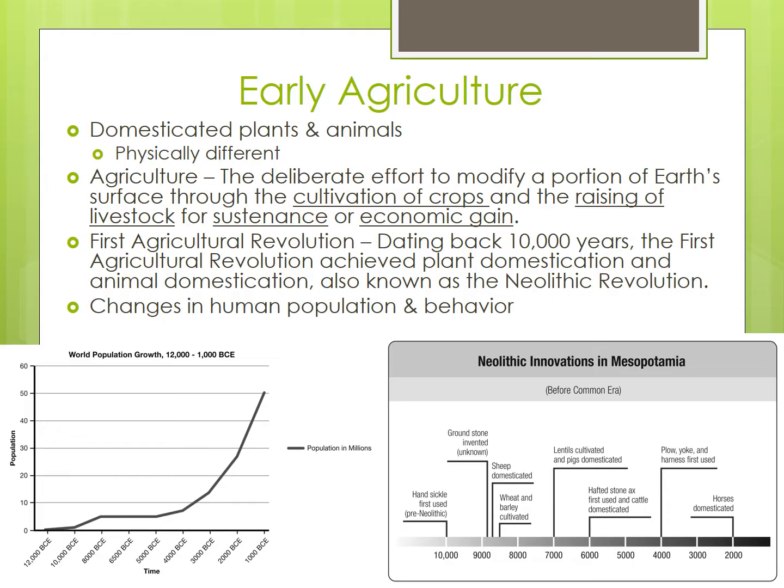This transition from nomadic hunter-gatherers to agriculturalists is a period dating back 10,000 years, known as the First Agricultural Revolution. It achieved plant domestication and animal domestication and is also known as the Neolithic Revolution.